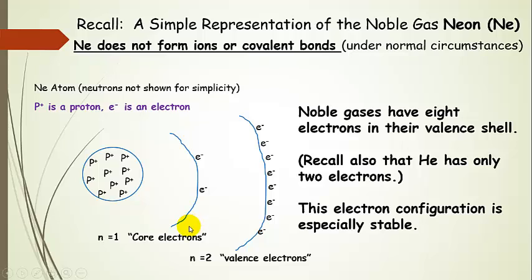The core electrons are in n=1. Neon then has eight valence electrons in n=2, which would be 2s and 2p. So the electron configuration would be 2s², 2p⁶. Neon is a noble gas with eight electrons in its valence shell, and this electron configuration is especially stable. Not all elements have eight electrons in their valence shells, so they have to figure out a way to either share or remove electrons in order to achieve that noble gas configuration.